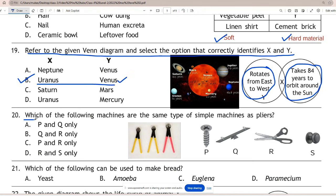Question 20: Which of the following machines are the same type of simple machines as pliers? Correct answer is B - Q and R. Seesaw and scissors are simple machines like pliers.